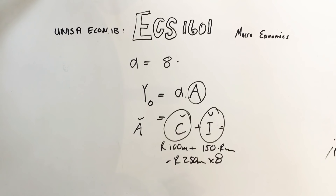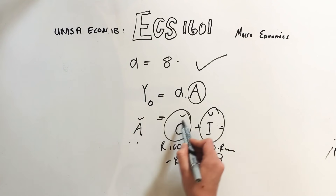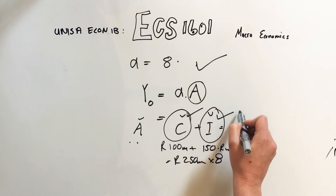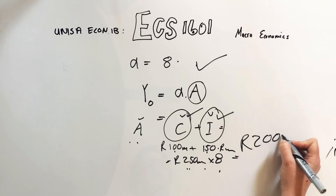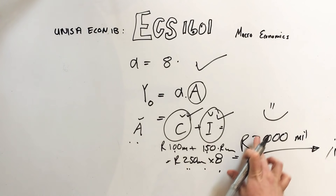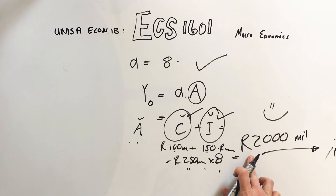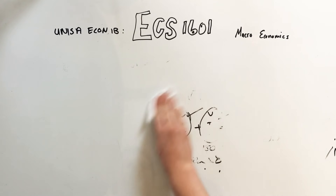Let me verify using AI — yes, our multiplier of 8 is correct, autonomous spending equals autonomous consumption plus autonomous investment which is 100 + 150 = 250 million, times 8 gives 2,000 million. That is confirmed as the correct answer. I'm going to do another example because I was all over the place with that one, so let's try again.